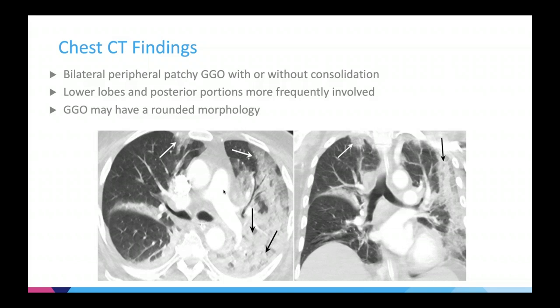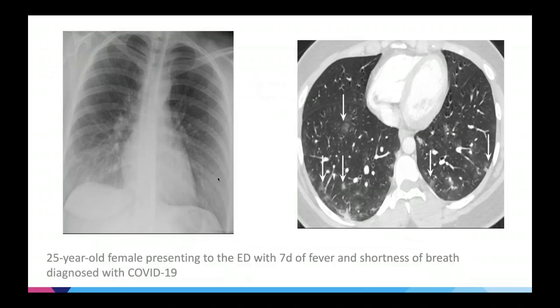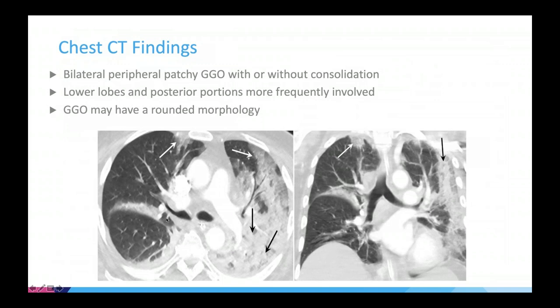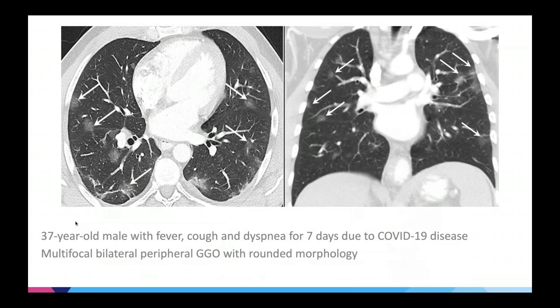Additional findings described on chest CT include the crazy paving pattern, which involves interlobular septal thickening. Here is an example of a 60-year-old male with fever and symptoms for seven days, showing round ground glass opacity with reticulation in the peripheral areas of the lung — typical for what we call a crazy paving pattern, which is also highly suspicious for COVID-19 infection.